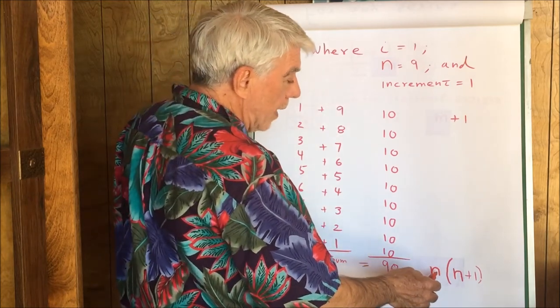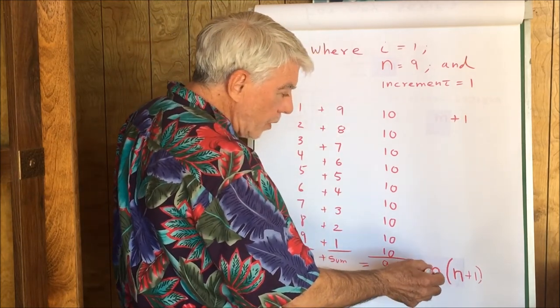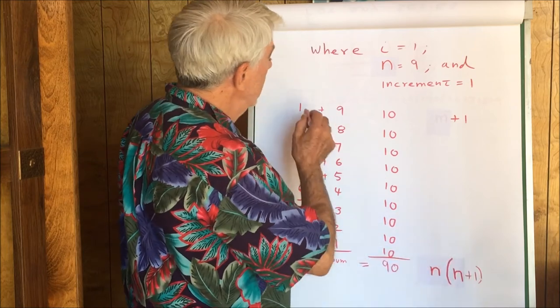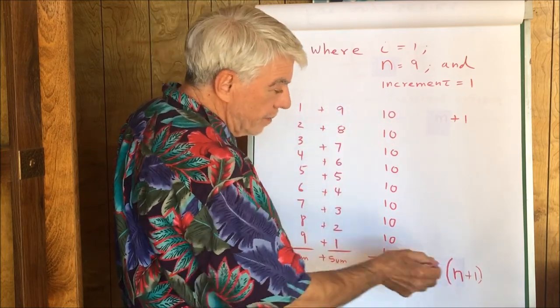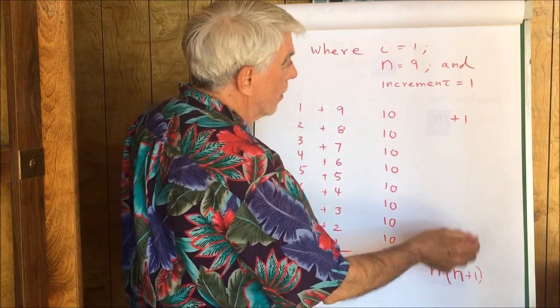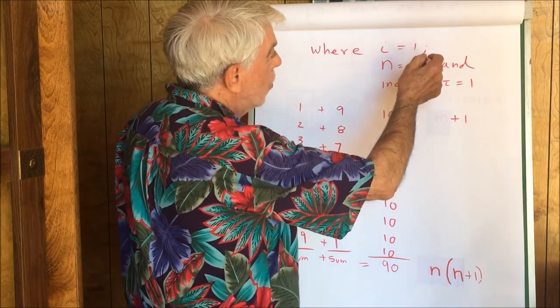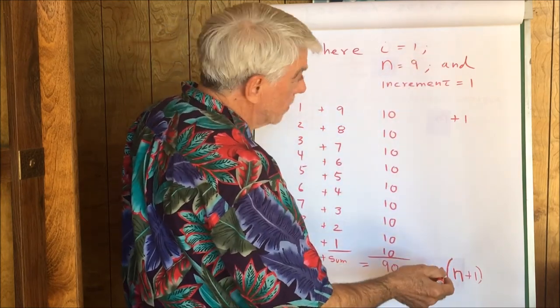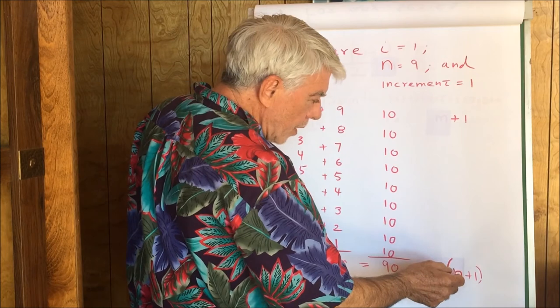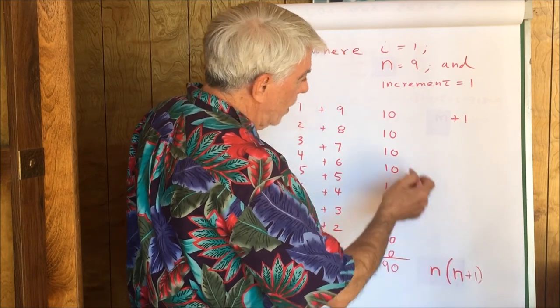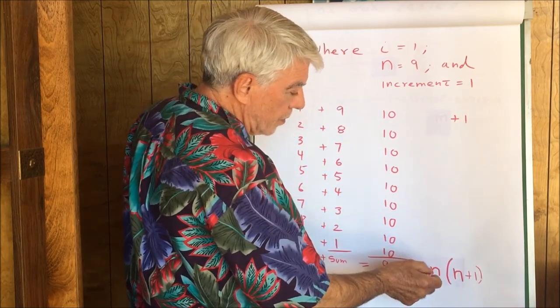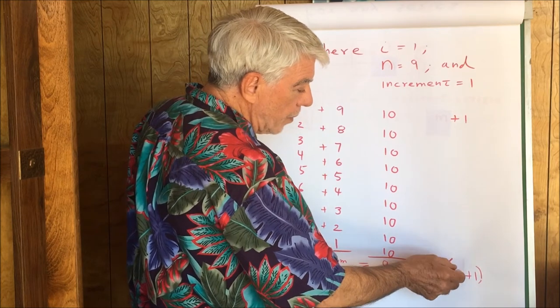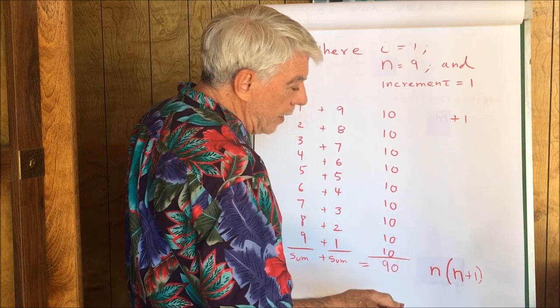So we can rewrite that as n plus 1. That gives us the 10. N plus 1 gives us the 10. Remember that i was 1 and n was 9. So here's the 10 and there's 9 of them. So we multiply 10 by 9 and we get the 90.